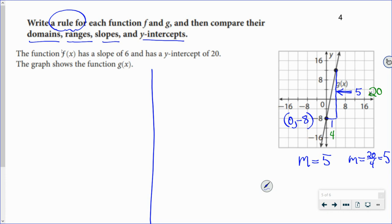So if I write a rule, here's my rule. This is g(x) that equals mx, so it'd be 5x, and then my y-intercept is negative 8. So g(x) = 5x - 8. I've got a rule.